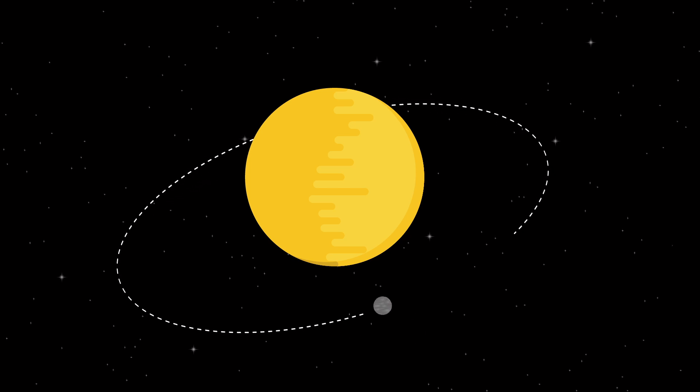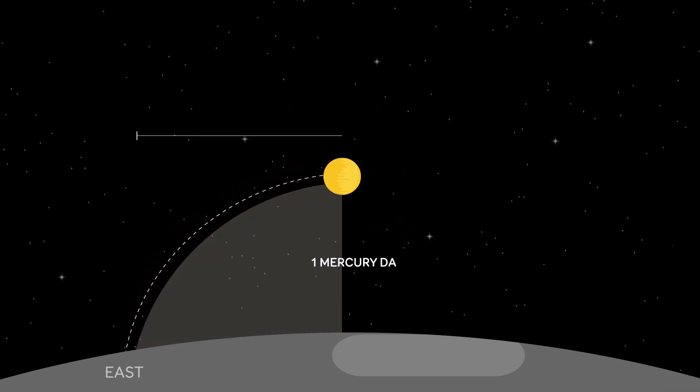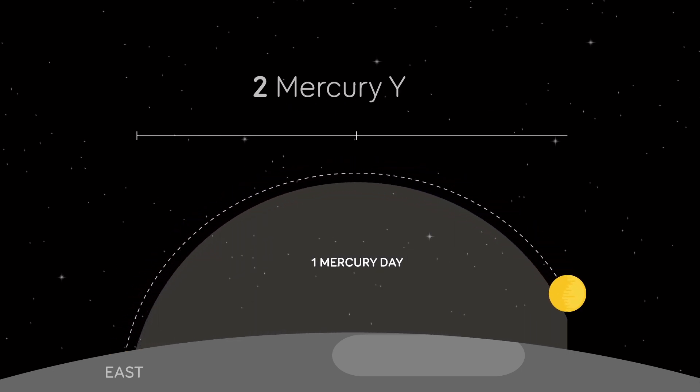Bizarrely, that means one sunrise to the next on Mercury takes exactly two of its years. It's a pretty strange place.